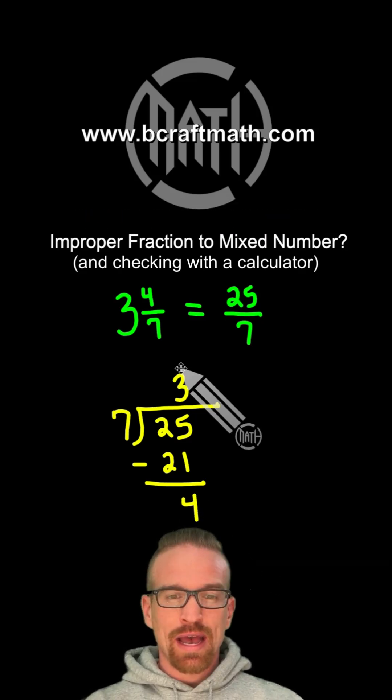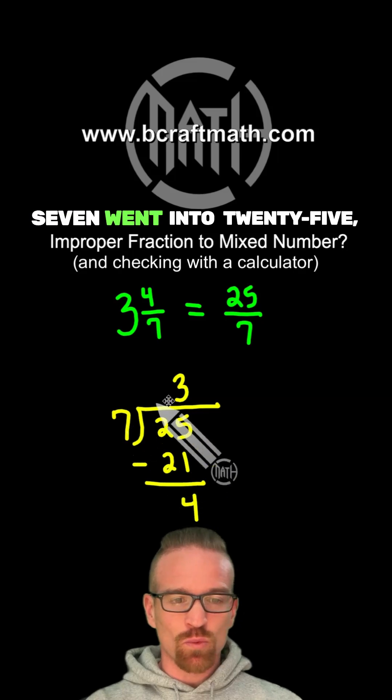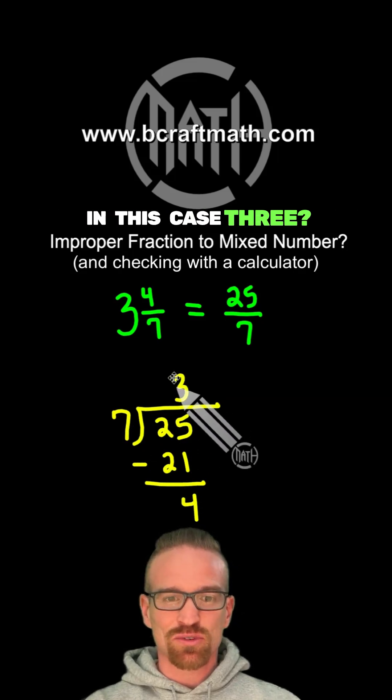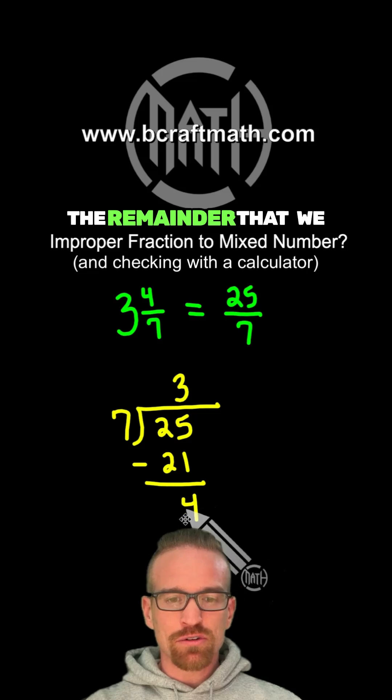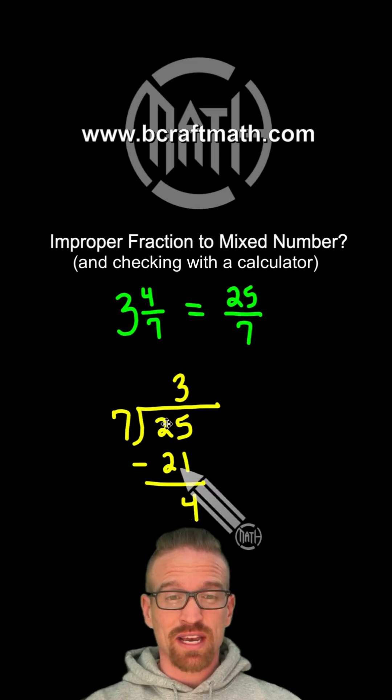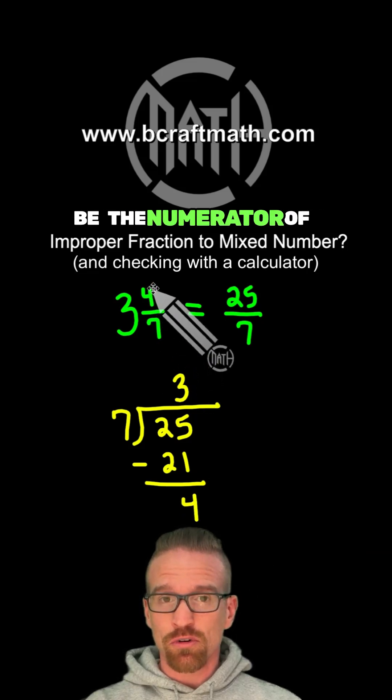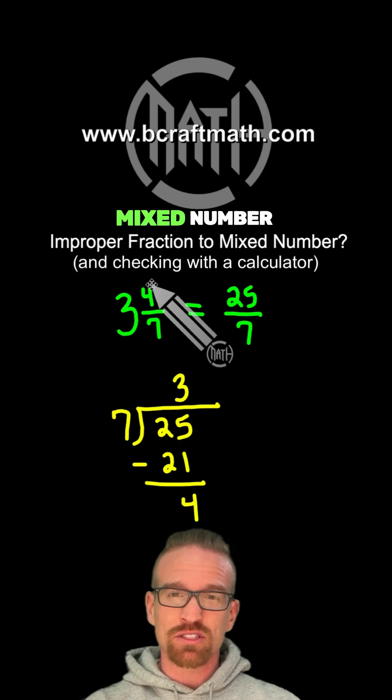Look at these values. How many ever times 7 went into 25, in this case 3? That's our big number in our mixed number. The remainder that we get, 4 in this case, that's going to be the numerator of our fraction in our mixed number.